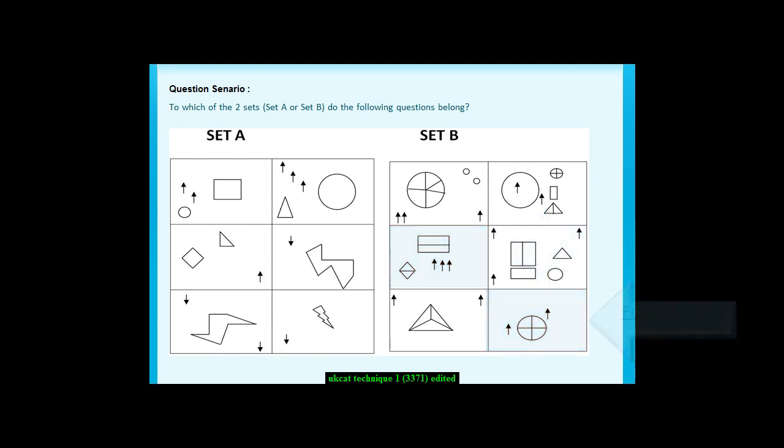Compare boxes with an odd number of segments. Do they have anything in common? These three boxes have arrows in the corners. The three boxes with even segments have arrows in the middle of the boxes.